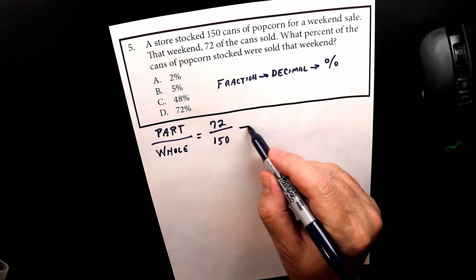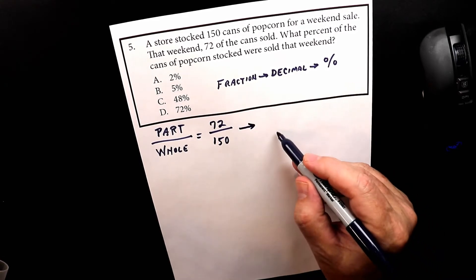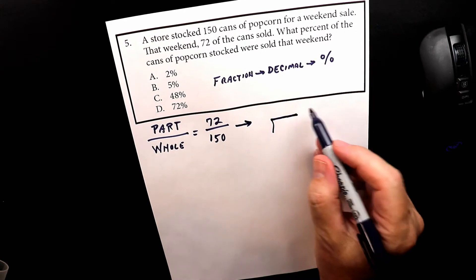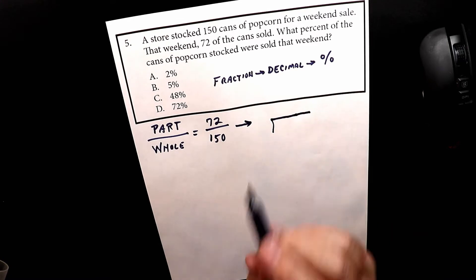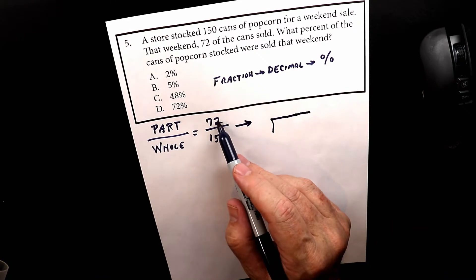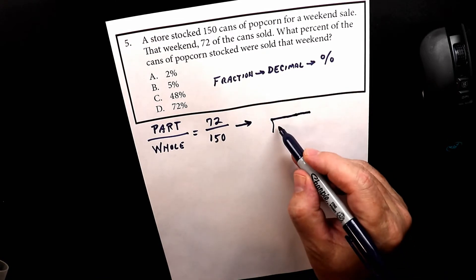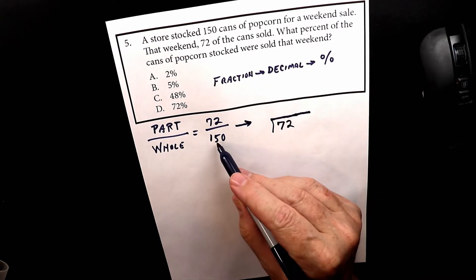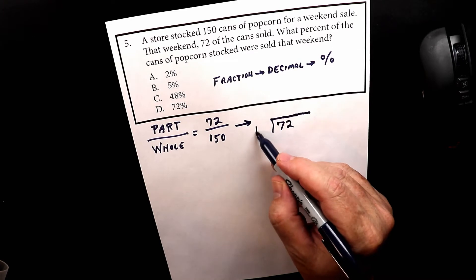Now the next thing we need to do is set up the division. And I think it's going to need to be a little bit longer. So the way it works is the numerator, the number on the top, goes inside the house. And then the whole, the total, goes outside the house.